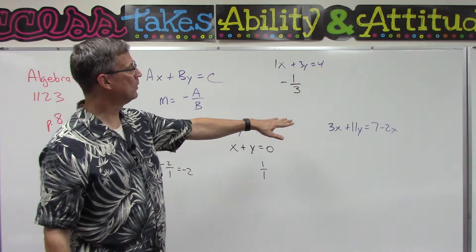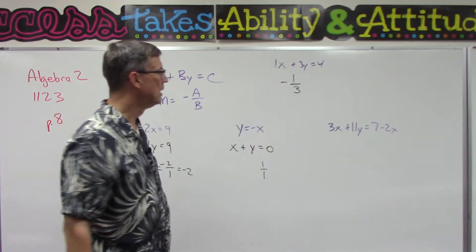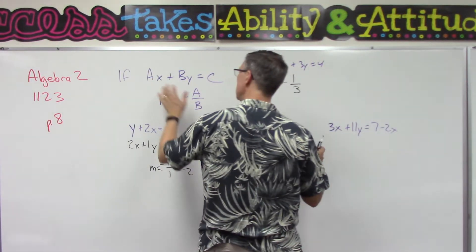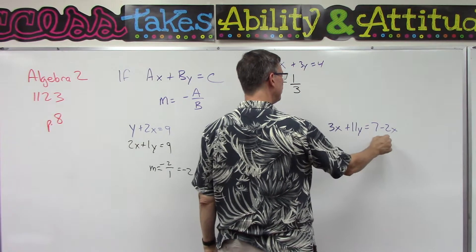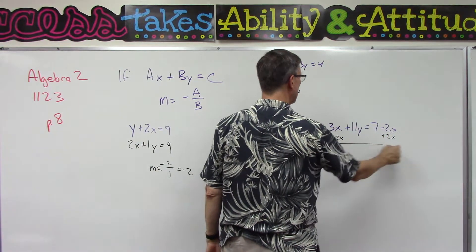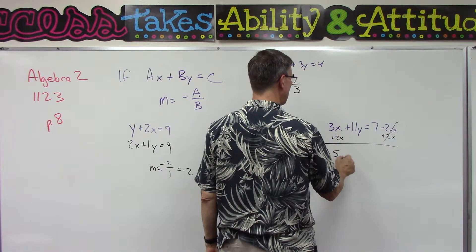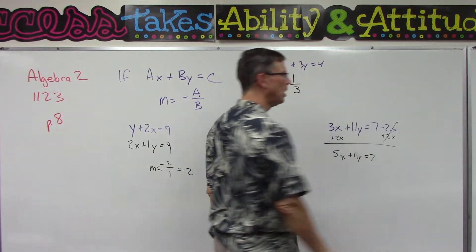All right, let me grab one of the four challenging ones. This looks hard. This is near the end of the page, but this isn't too bad. We again want to get it in this form, so I need to bring the 2x over, so I'll add 2x.